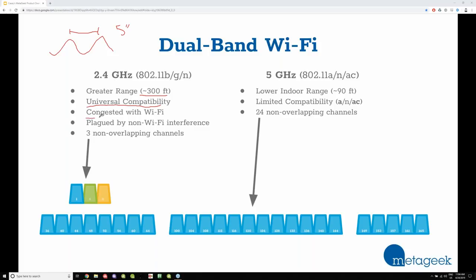As a result, it's very congested with Wi-Fi. It's also congested by non-Wi-Fi because a lot of non-Wi-Fi devices operate here as well — walkie-talkies, cordless phones, baby monitors, microwave ovens can all use the 2.4 GHz band. There's actually only three non-overlapping channels in the 2.4 GHz band: channels 1, 6, and 11. So those are really the only three channels that you want to use, which isn't much.